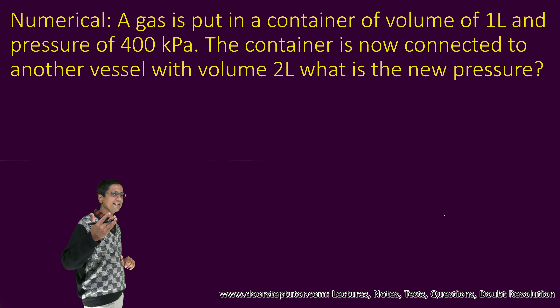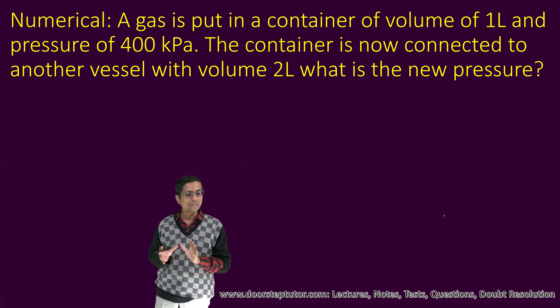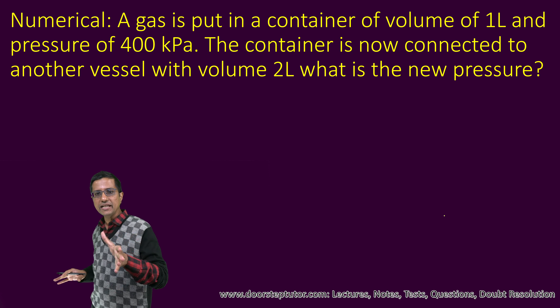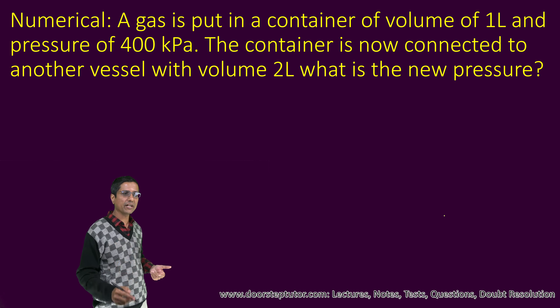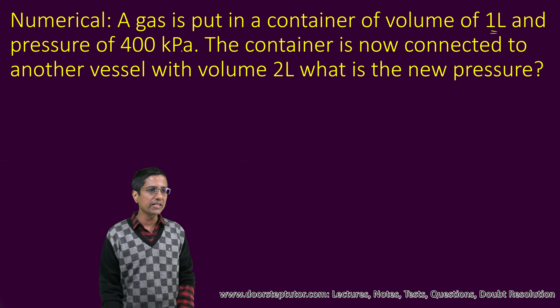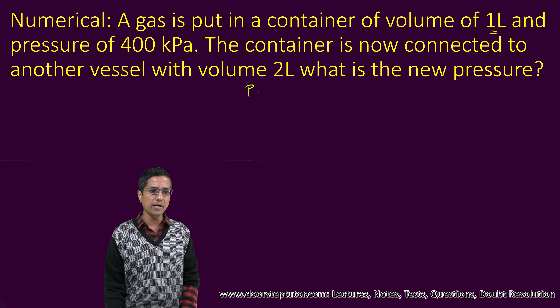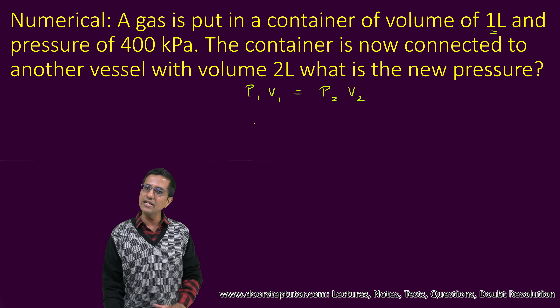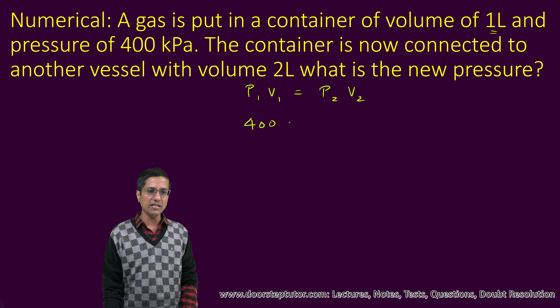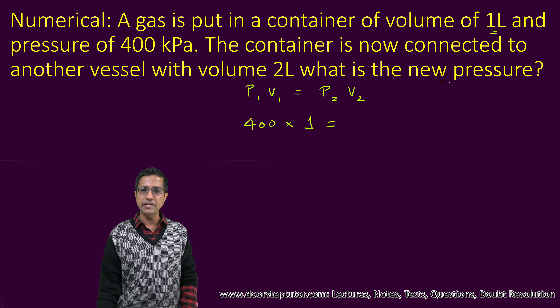Now this is the second example. A gas has been put in a container. The volume of the container is equal to 1 liter and the pressure is equal to 400 kilopascal. So P1V1 equals P2V2 is the relationship we are going to use again. The pressure P1 has already been given as 400 kilopascal and the first volume is 1 liter. We have been asked to find the value of the new pressure P2, which is the question mark.